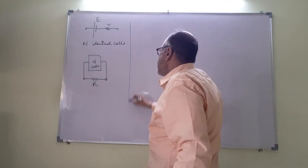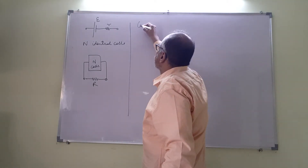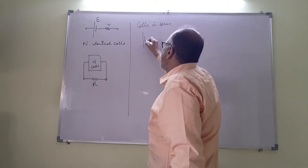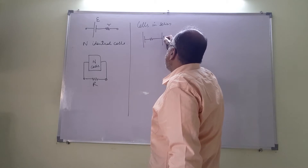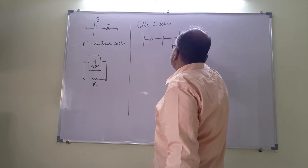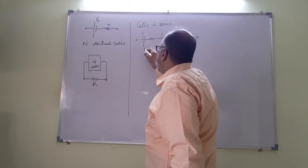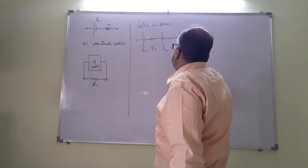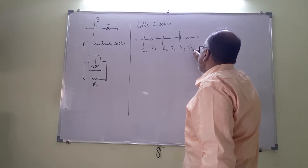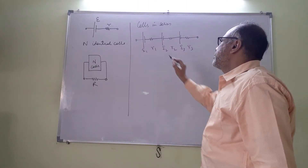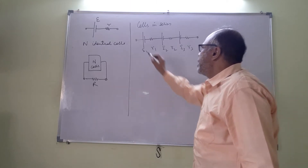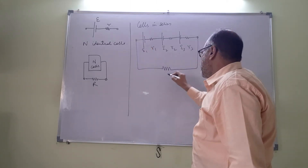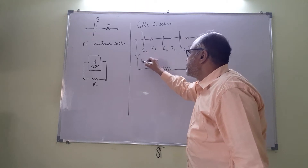Let us see cells in series. Suppose we have three cells of EMF E1, R1, E2, R2, E3 and R3. R1, R2, R3 are the internal resistances and we connect them to an external resistor R, with a current I flowing.